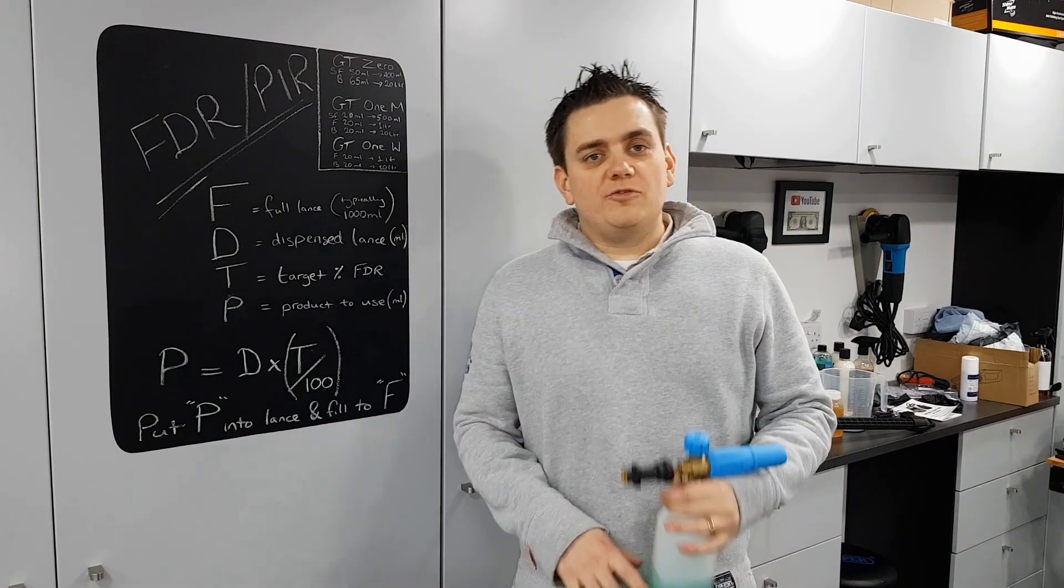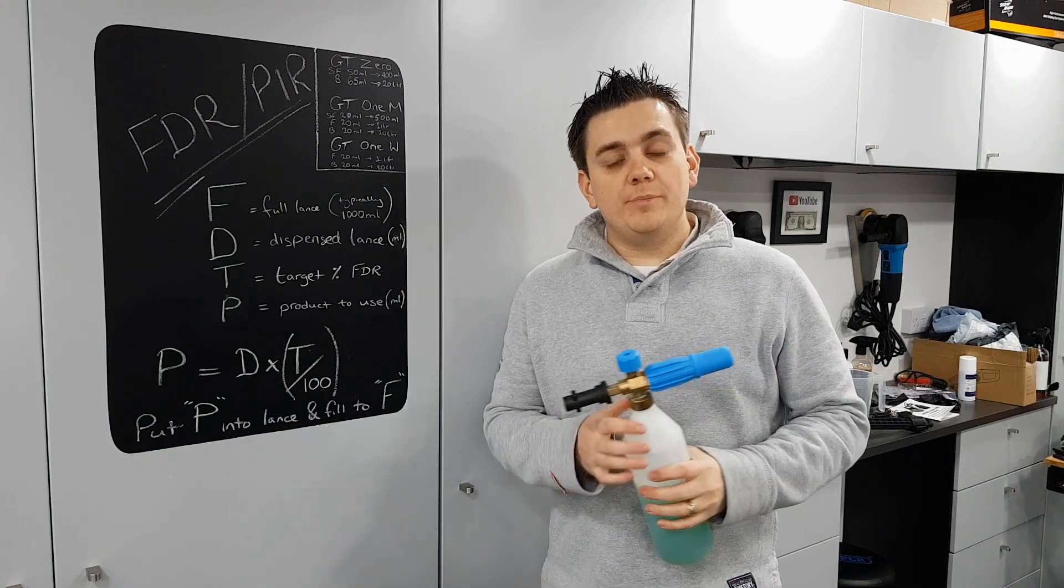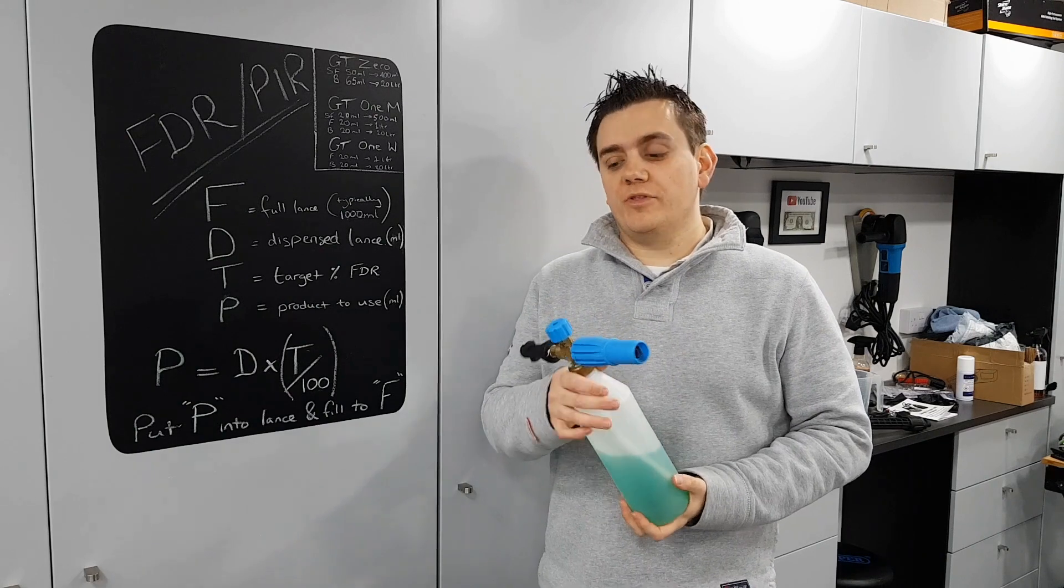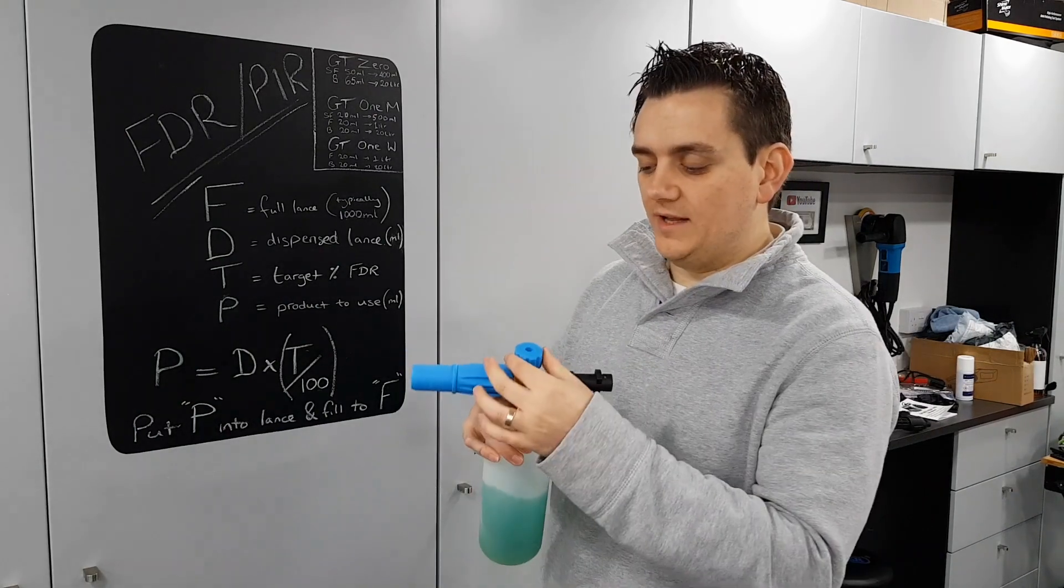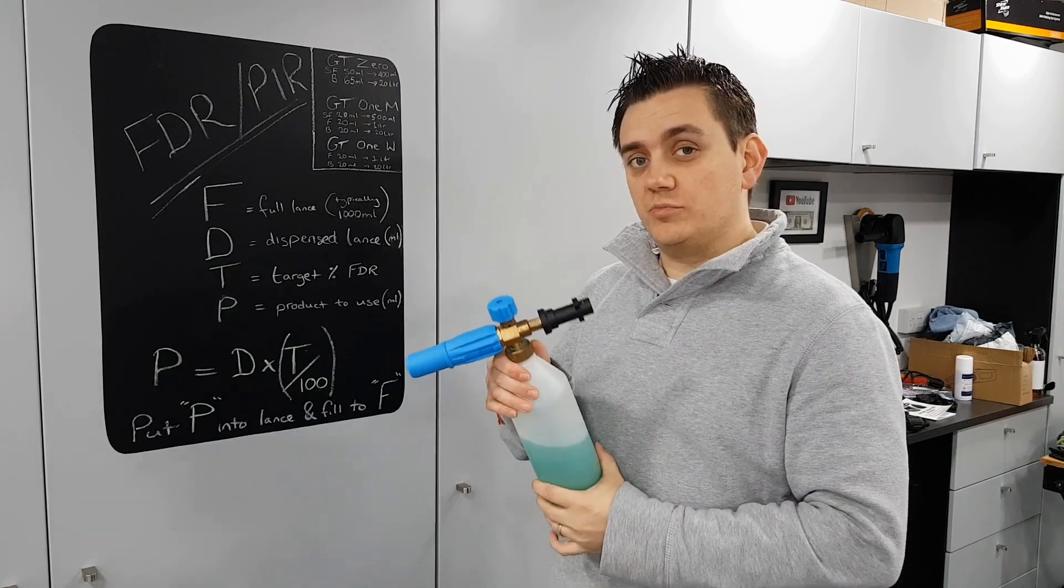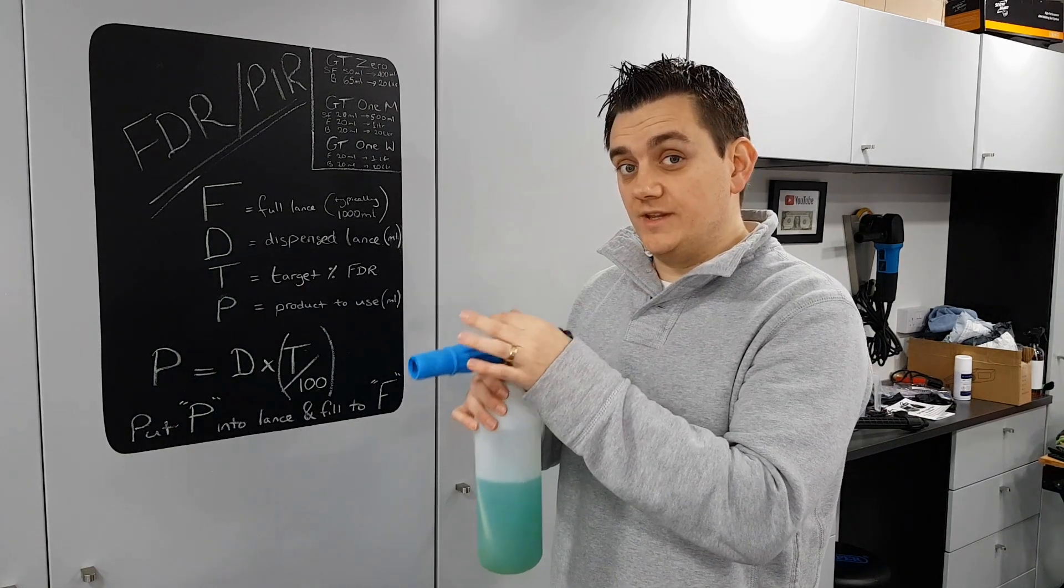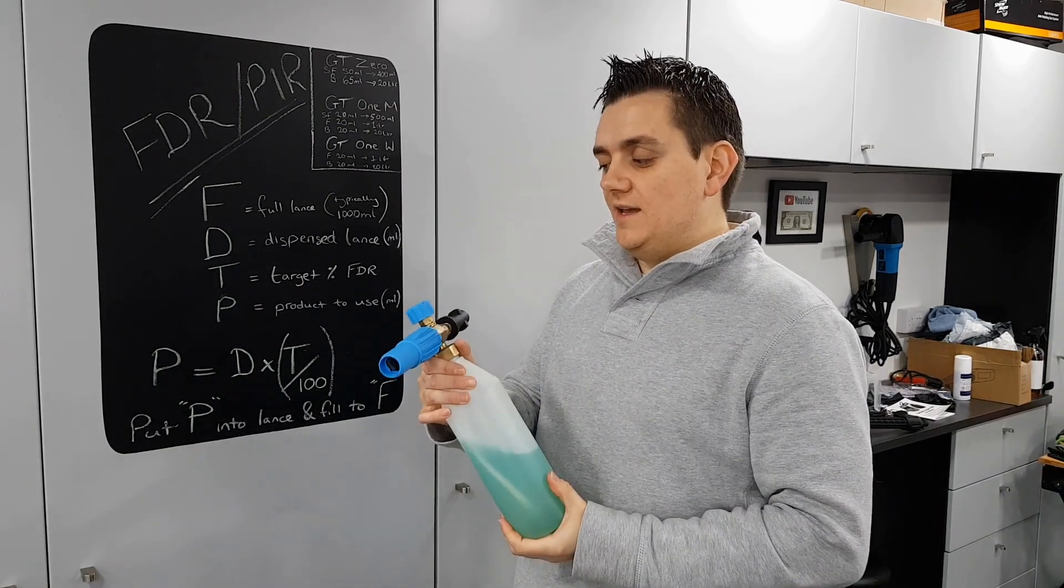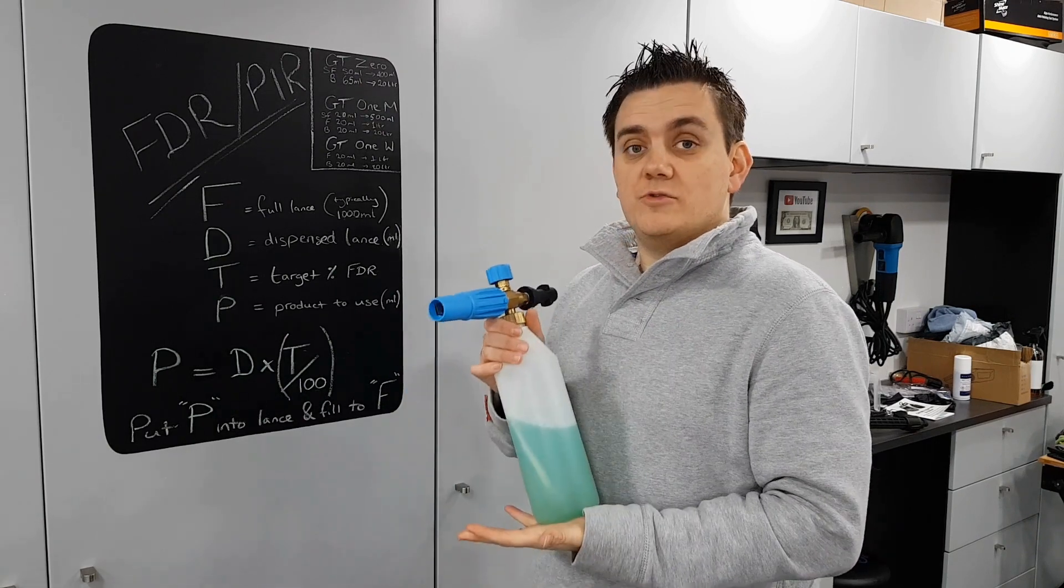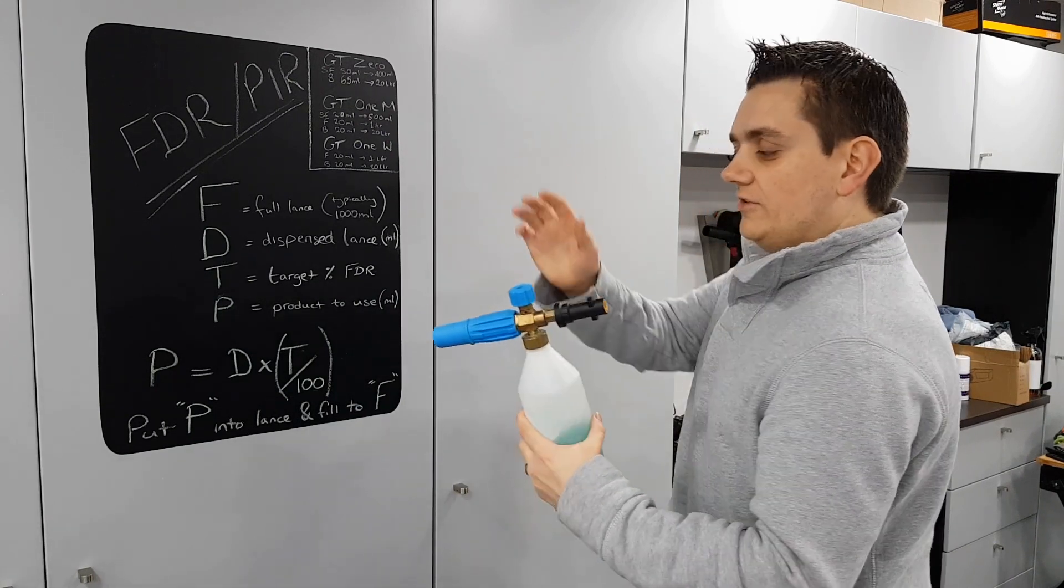So hopefully that was easy enough for you to understand. Now there are a couple of things to mention. One, PIR or FDR does vary on a number of things, one being if you've got a snow foam lance, changing the dilution on the top, so adding more water to products, you're going to have to work out a new FDR every time you change that setting. So it is worth working out what this is at the maximum and noting it down.